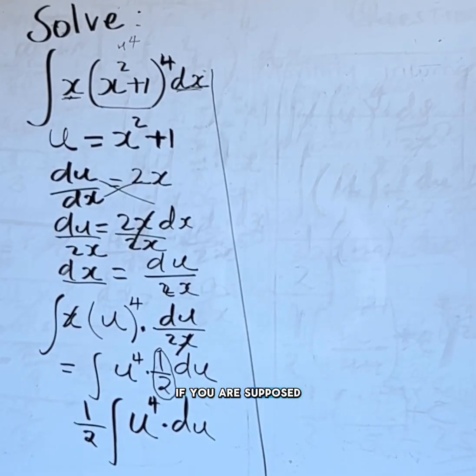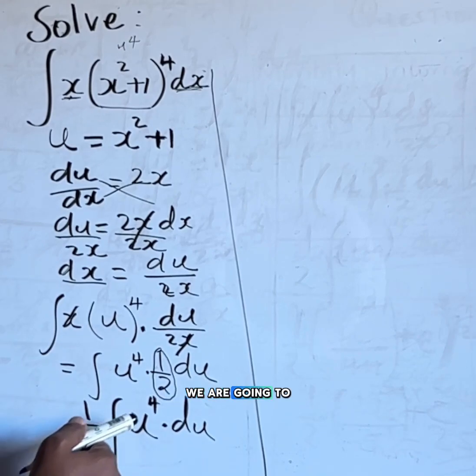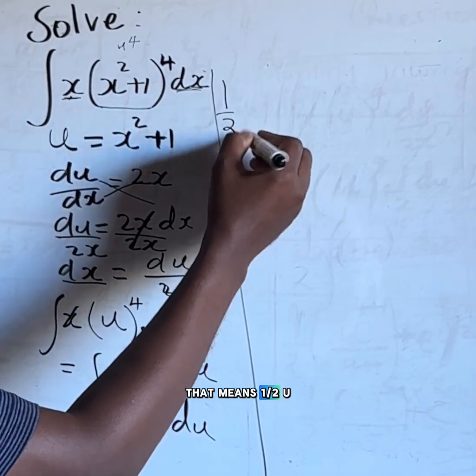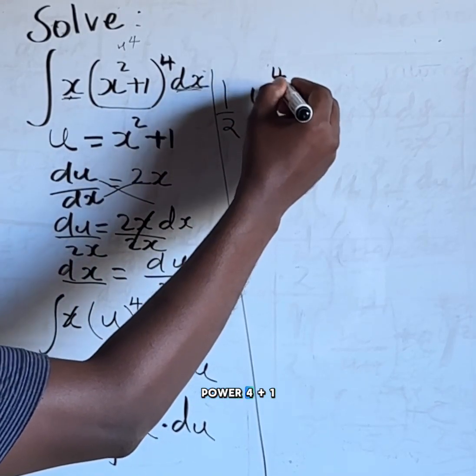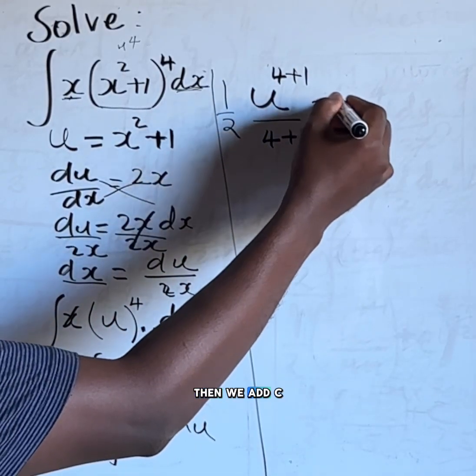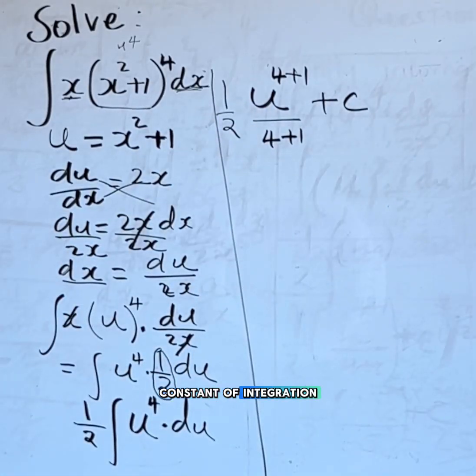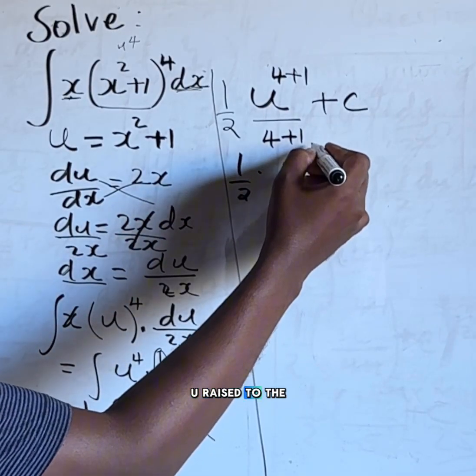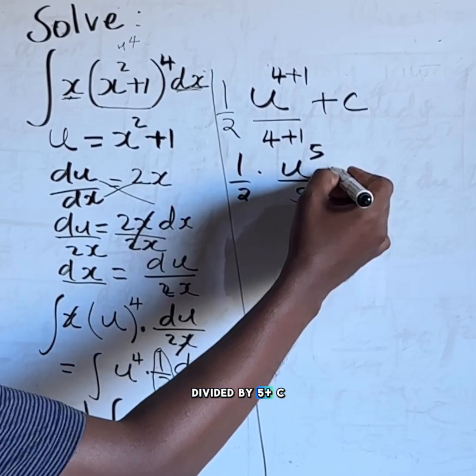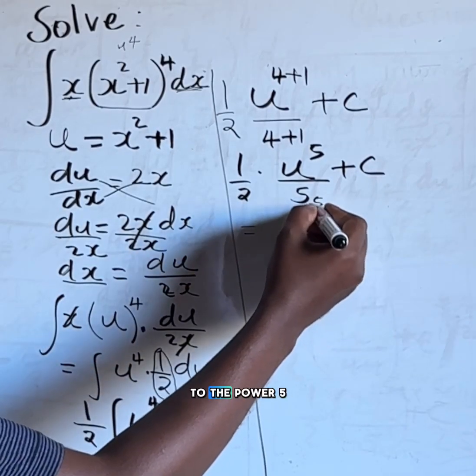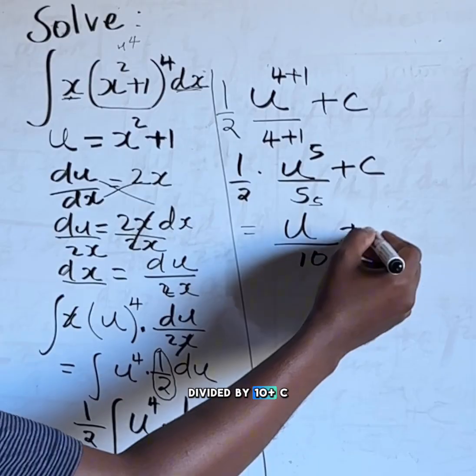Now to integrate this we increase the power of u by 1 and then divide by the overall power. That means one half u raised to the power of 4 plus 1 divided by 4 plus 1, then we add c which we call the constant of integration. This will give us one half multiplied by u raised to the power of 5 divided by 5 plus c. If we simplify further this will be u raised to the power of 5 divided by 10 plus c.